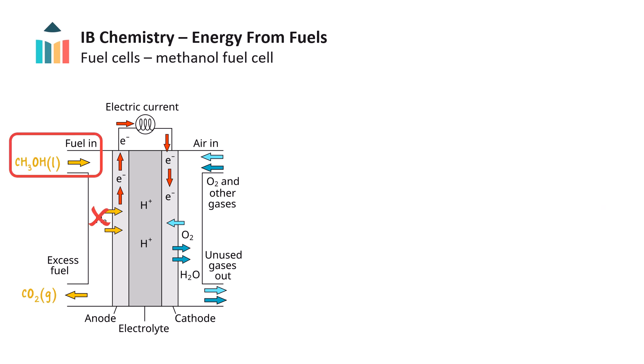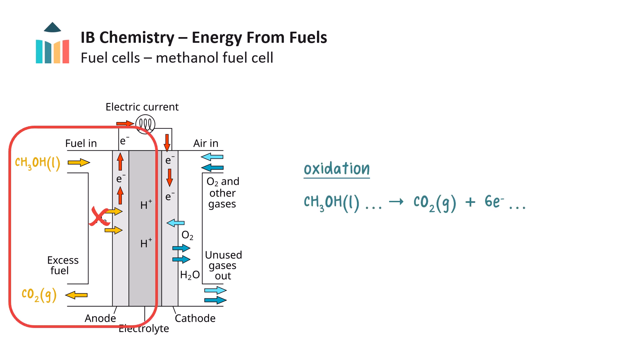Methanol fuel cells are similar, but they use liquid methanol instead of hydrogen. The methanol is oxidized over a catalyst under acidic conditions. At the anode, methanol is oxidized to carbon dioxide. Six electrons are transferred, since the oxidation number of carbon changes from minus two to plus four.